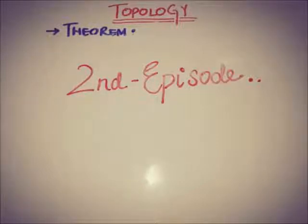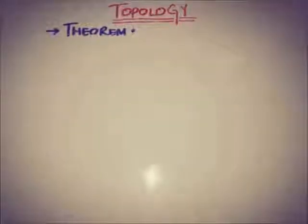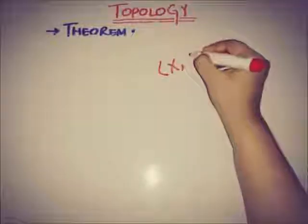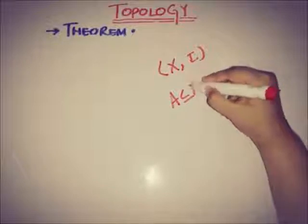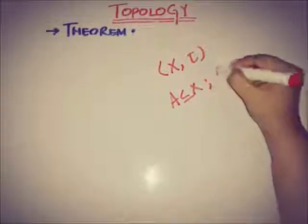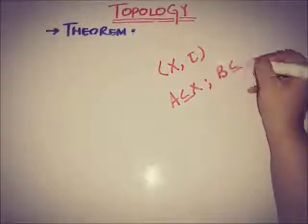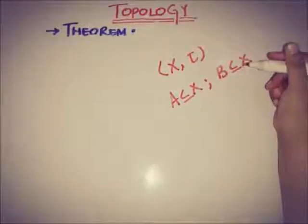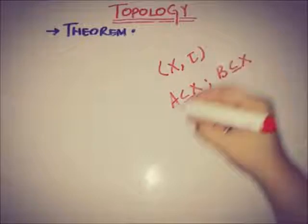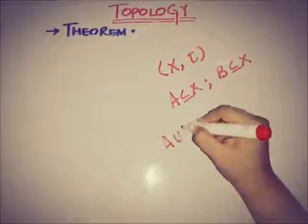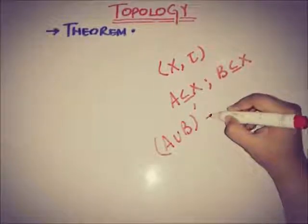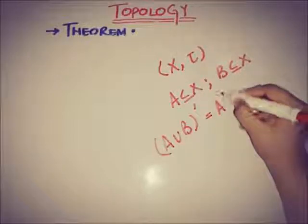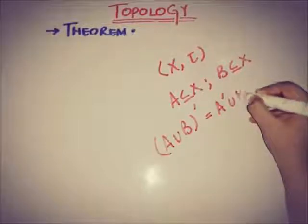Today the theorem is: if (X, τ) is a topological space and A and B are two subsets of X, then (A∪B)' is equal to A'∪B'.